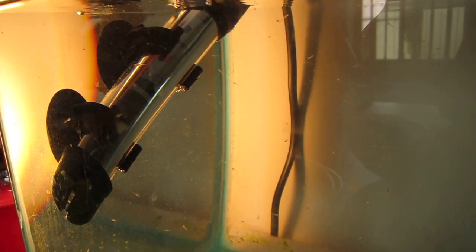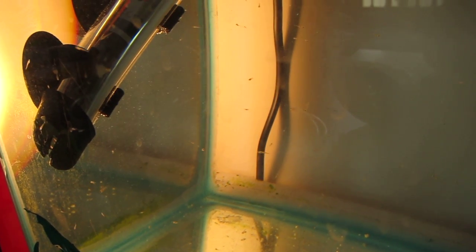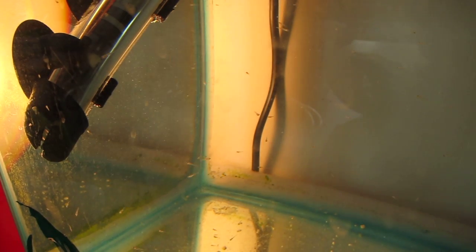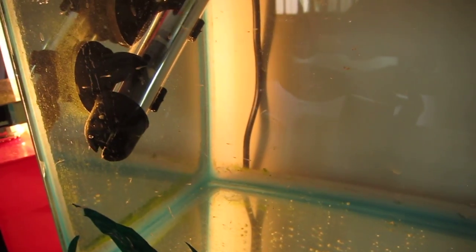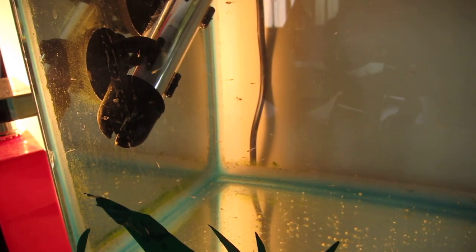My Danio fry have hatched, so you can see they're pretty tiny and there's actually quite a few of them. There's probably about, I'd say at least 100 in there, maybe 50. I don't know, it's kind of hard to estimate because they're so tiny.